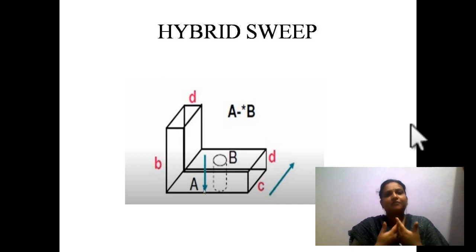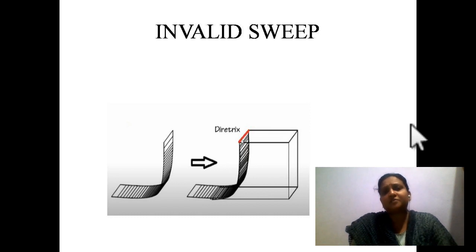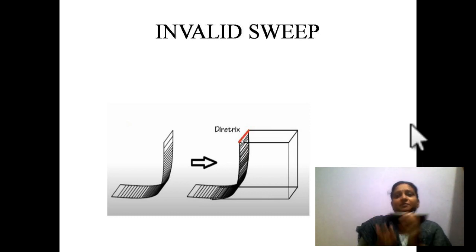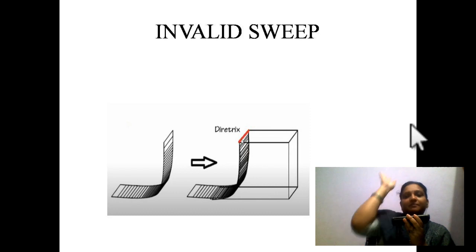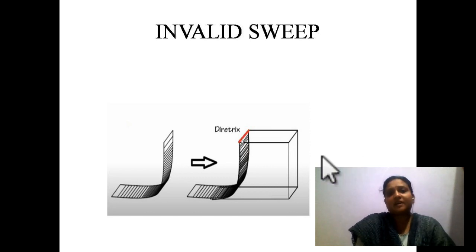Invalid sweep is technically when we have not performed the sweeping operation correctly. However, in practice, sometimes we use this type of sweep when making components. For example, if you have a straight component and you take an angled path and perform some operation — subtracting a required curve — you get this type of sweep. When we get a degenerate or erroneous figure in that case, we call it an invalid sweep.